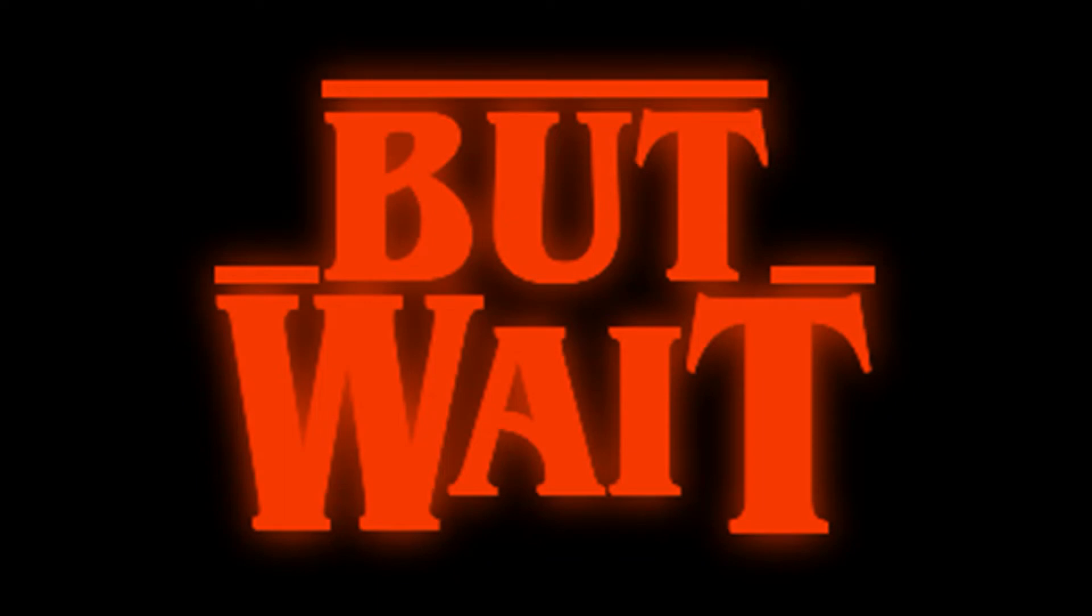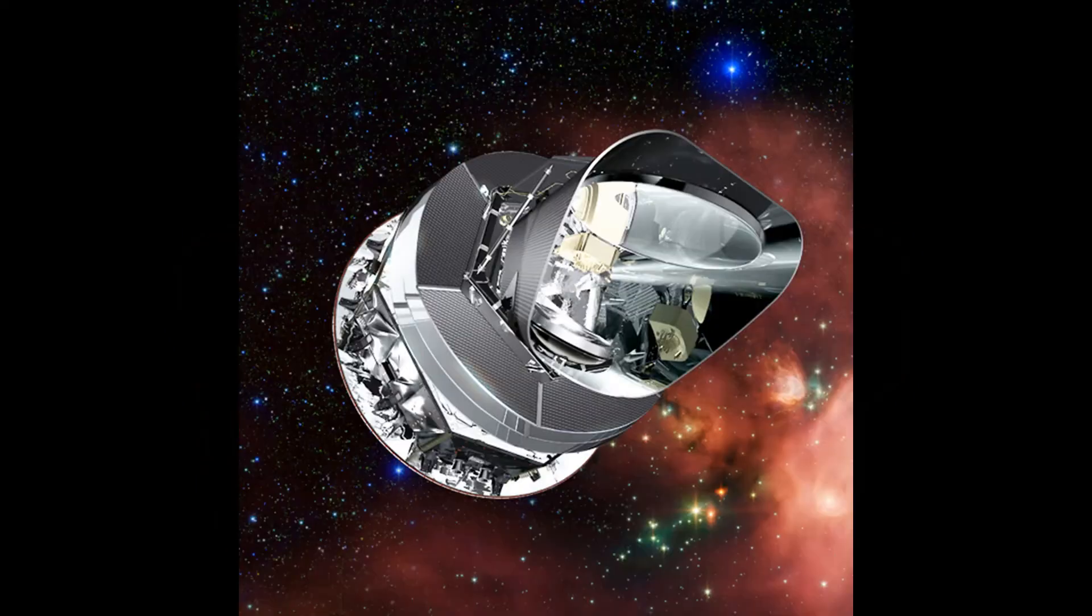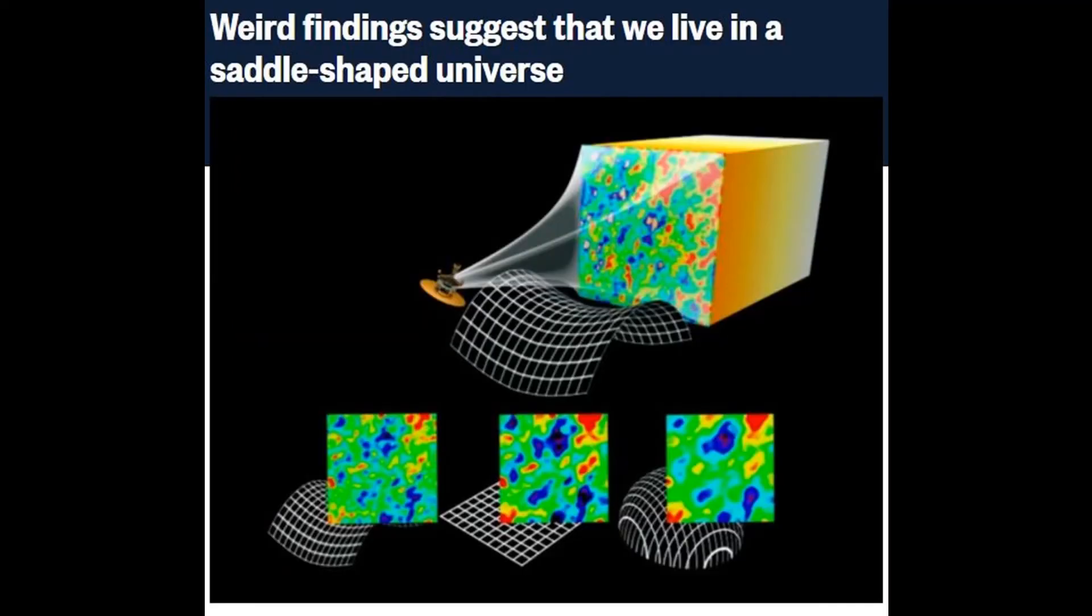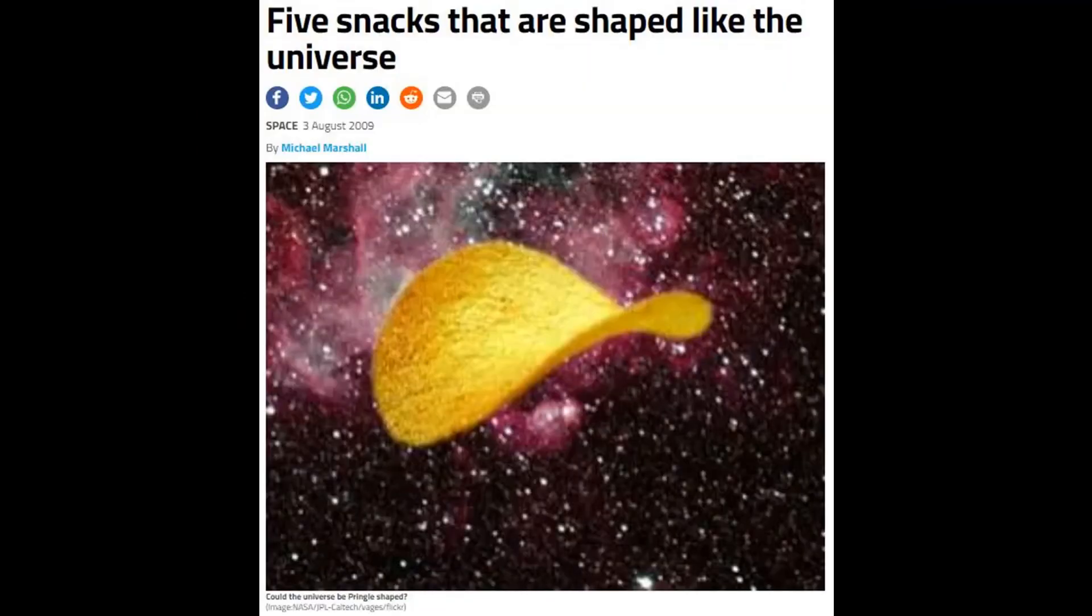But there's more. As recently as 10 years ago, scientists looking at the Big Bang with giant telescopes said anomalies they found in the data suggested the fabric of space and time could be shaped like a saddle. Or a Pringle.